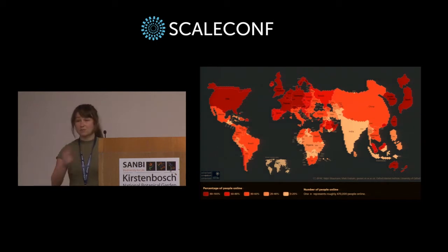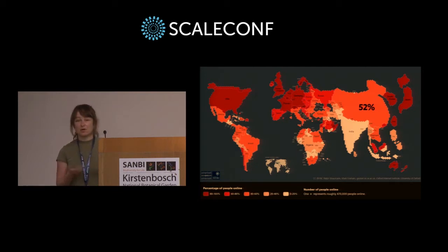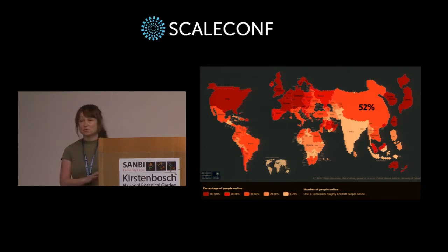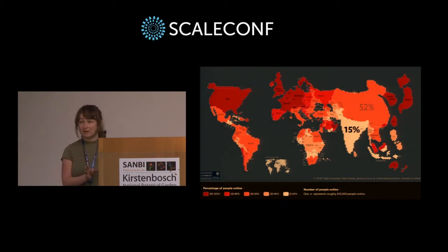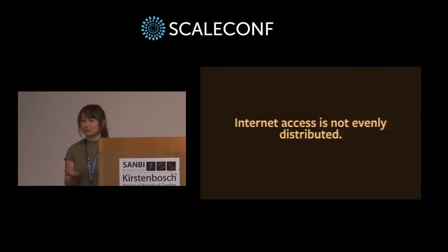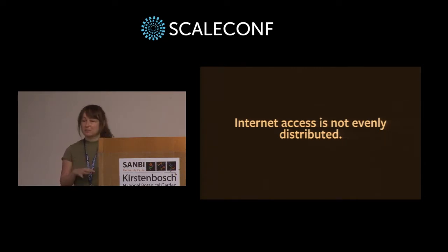For example, China has the most people connected to the internet in the world, but this accounts for only 52% of their overall population. And India, which has the second most people connected, is even more striking, with internet penetration of only 15%. In fact, 75% of the world's internet users come from only 20 countries, which means the remaining 178 countries have a combined internet presence of only about half a billion. This pretty clearly shows that internet access is not evenly distributed geographically, and it's becoming yet another divide between the developed and developing worlds.